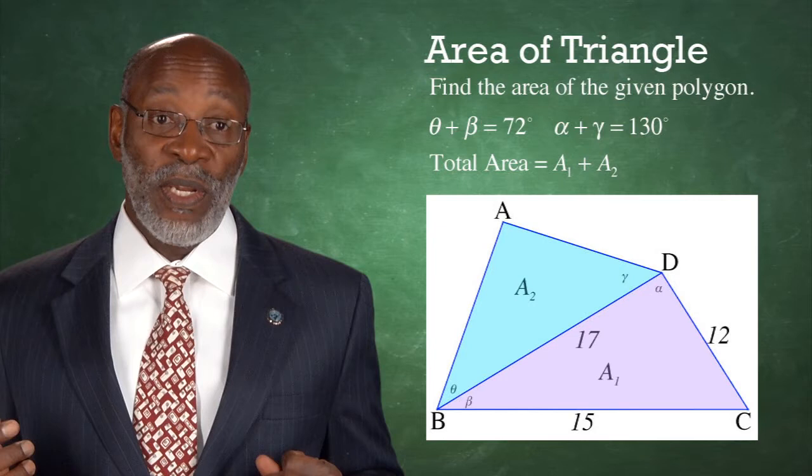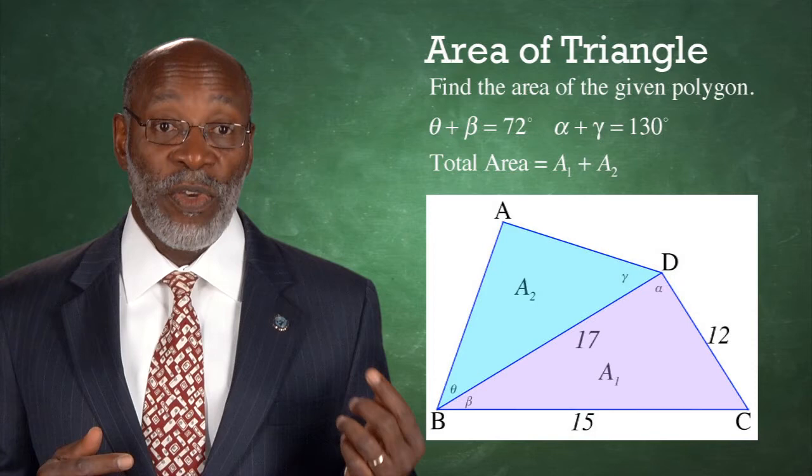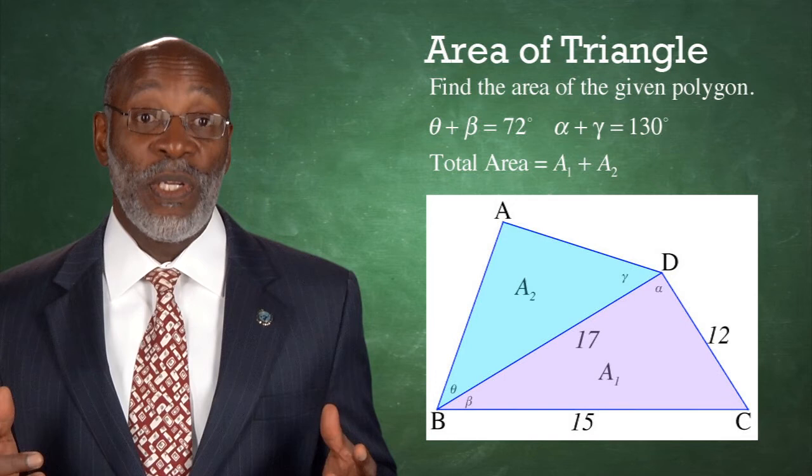Triangle ABD we call area 2, and triangle BCD area 1. So the total area is area 1 plus area 2.